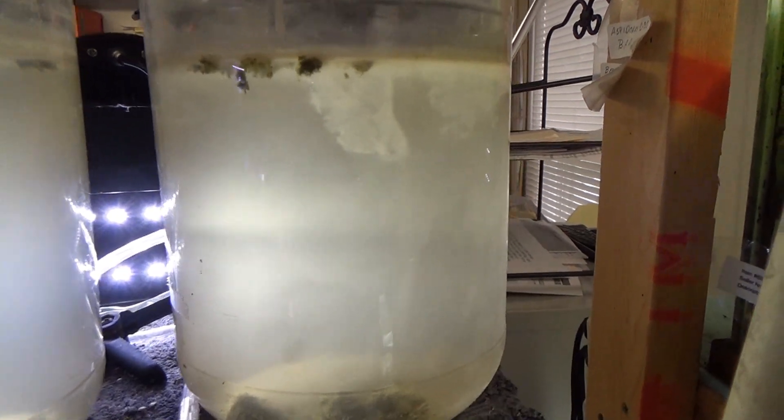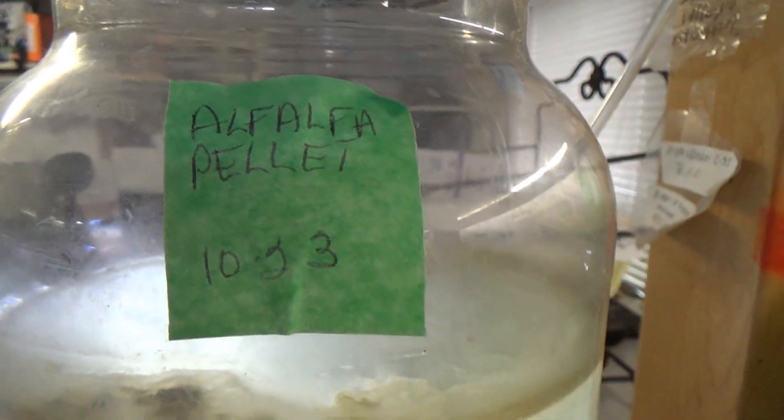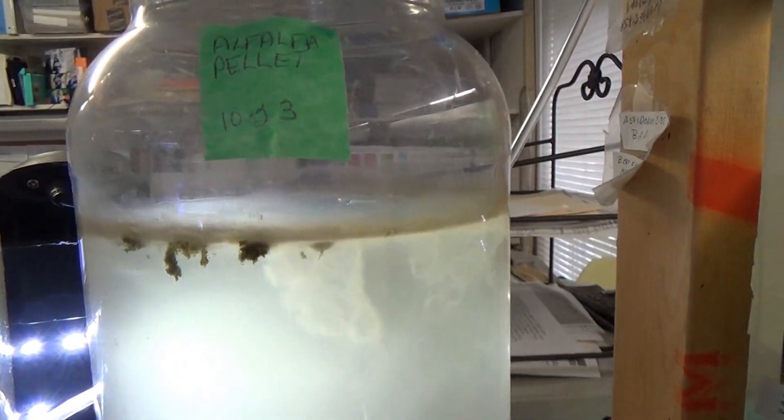I took some water out of the rain barrel, and that was back on, as you can see, 10/23, and I put in an alfalfa pellet.